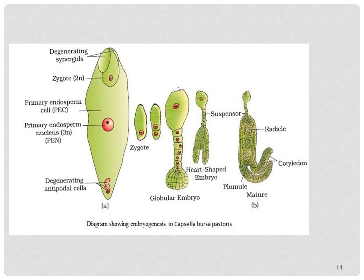Here in this diagram I am showing the process of embryogenesis in Capsella bursa-pastoris. Initially the embryo is oval-shaped. You can clearly see that the zygote divides into two cells, then a globular embryo is formed. Later it is converted into the heart-shaped embryo with a suspensor, after which the radicle, cotyledons, and plumule are formed in the mature embryo. The oval-shaped embryo contains degenerating synergids, the diploid zygote, primary endospermic cells, primary endospermic nucleus, and degenerating antipodal cells.